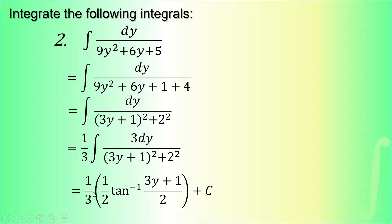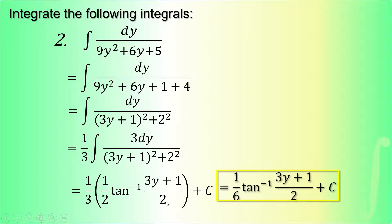Using the arctan formula, with a = 2, we get (1/2) arctan((3y+1)/2). Multiplying both constants together — one-third times one-half — that equals (1/6) arctan((3y+1)/2) + C.